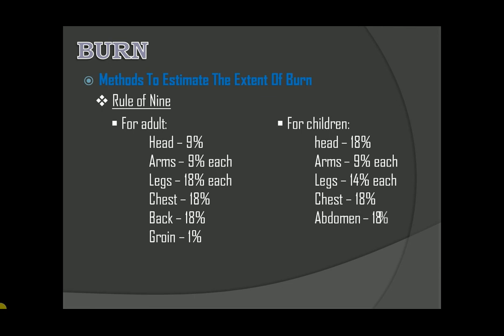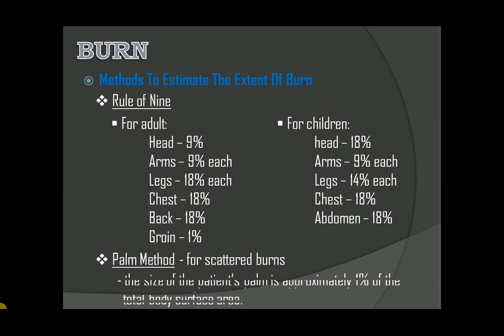Lastly, we have the palm method. This method is used for scattered burns. The size of the patient's palm is approximately 1% of the total body surface area.